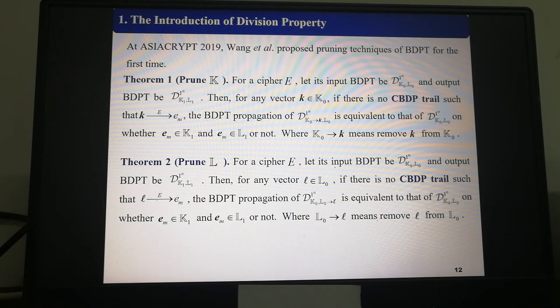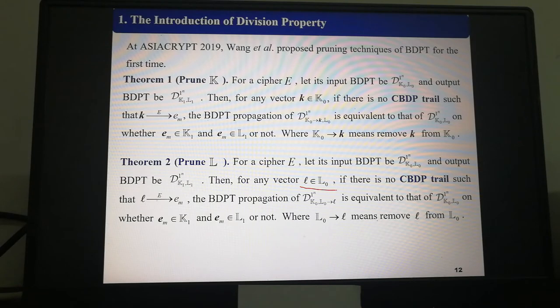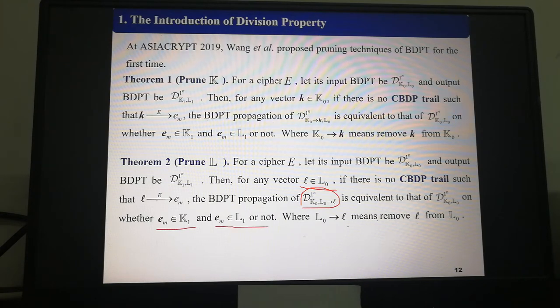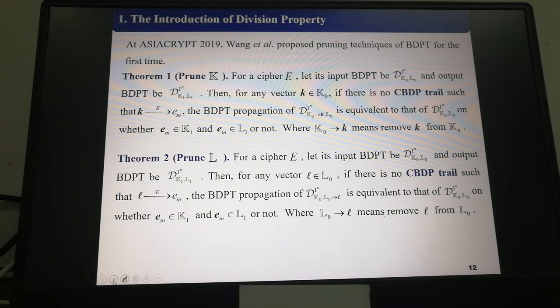The second one, for cipher E, let the input BDPT be D_{K_0, L_0} and the output BDPT be D_{K_1, L_1}. Then, for any vector l in L_0, if there is no CBDP trail such that l to e_i, the BDPT propagation of this is equivalent to that of D_{K_0, L_0\l}, whether e_i in K_1 and e_i in L_1 or not. Where L_0\l means remove l from L_0. Finally, they proposed an MILP-based method of searching integral distinguishers based on BDPT accurately.